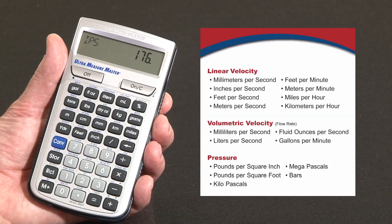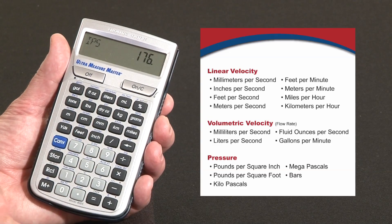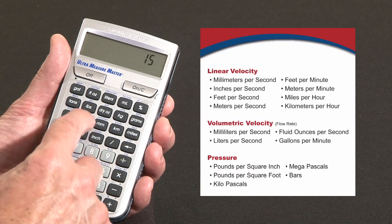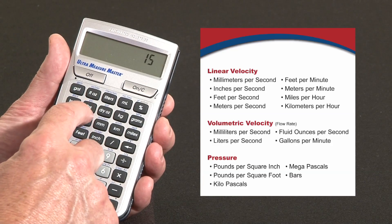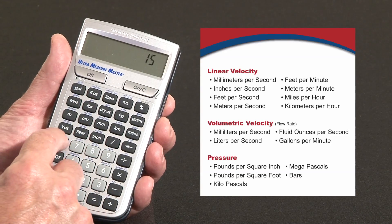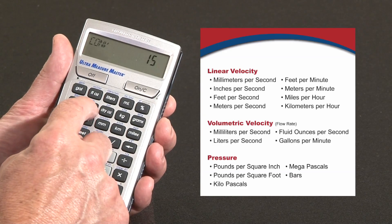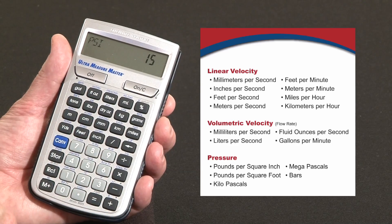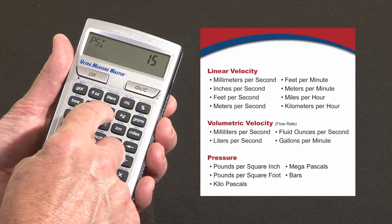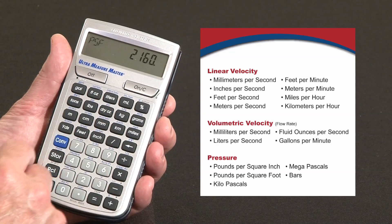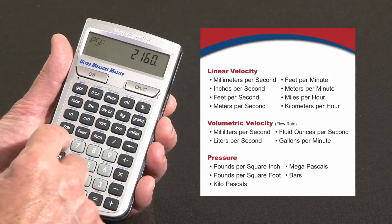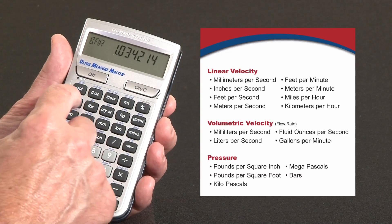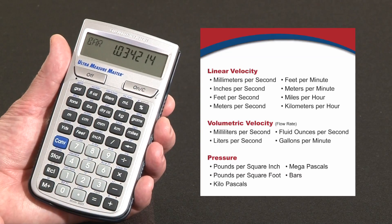You can also do calculations for pressures. Say you've got something that's fifteen pounds per square inch — over the pounds key it's PSI. So enter that as PSI: fifteen pounds per square inch. How many pounds per square foot? You can also go to kilopascals, you can go to bars, et cetera.